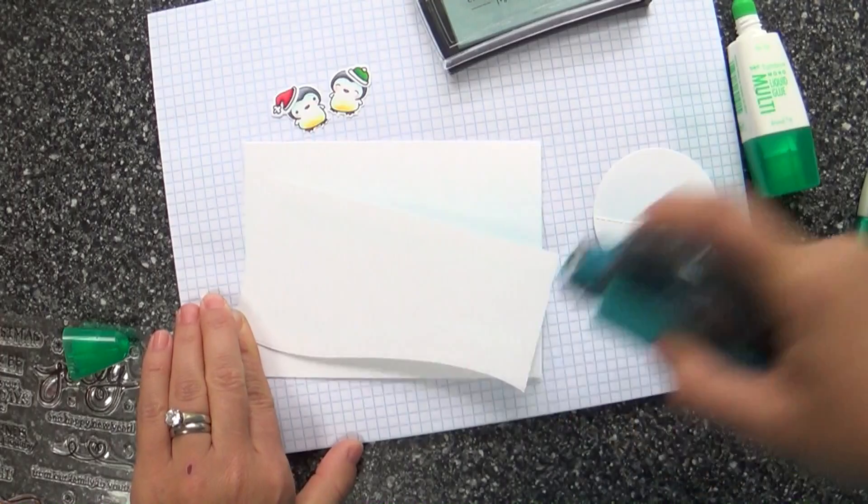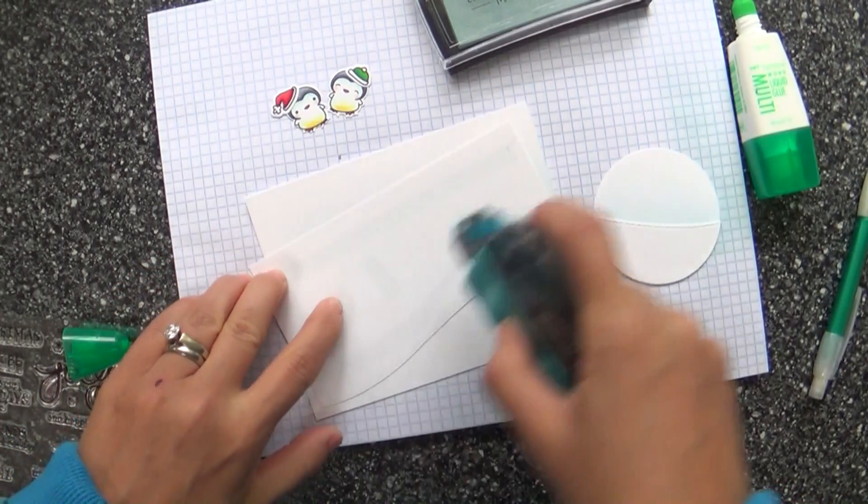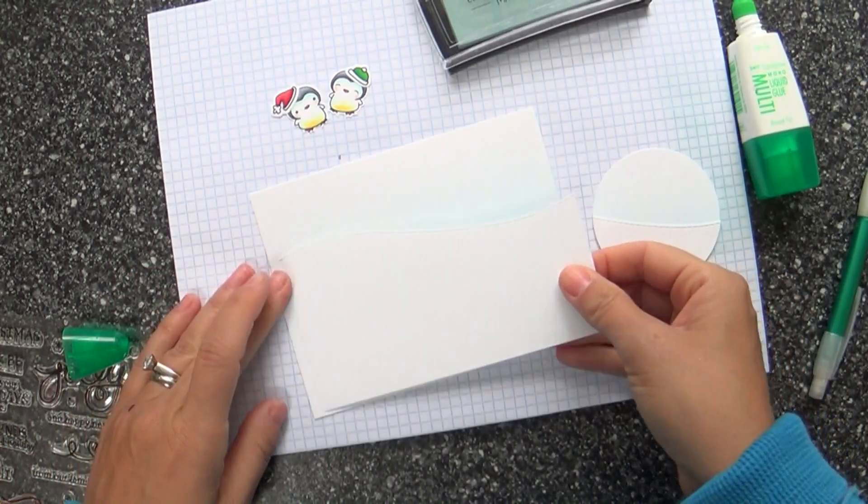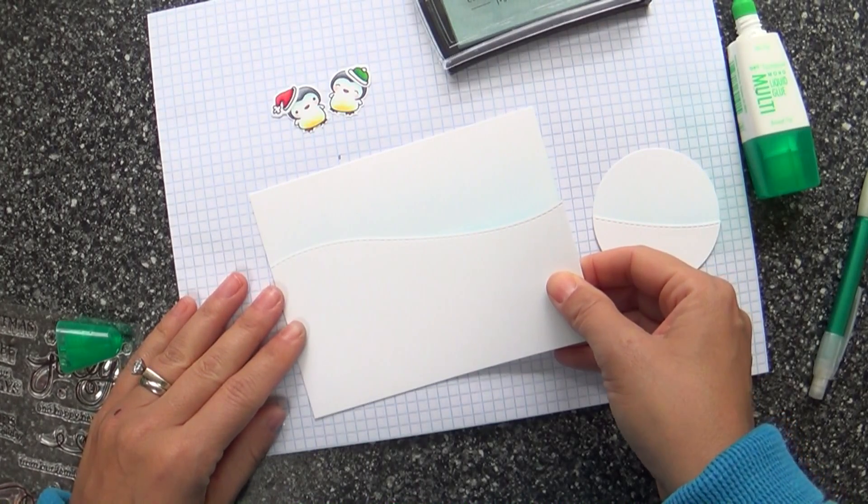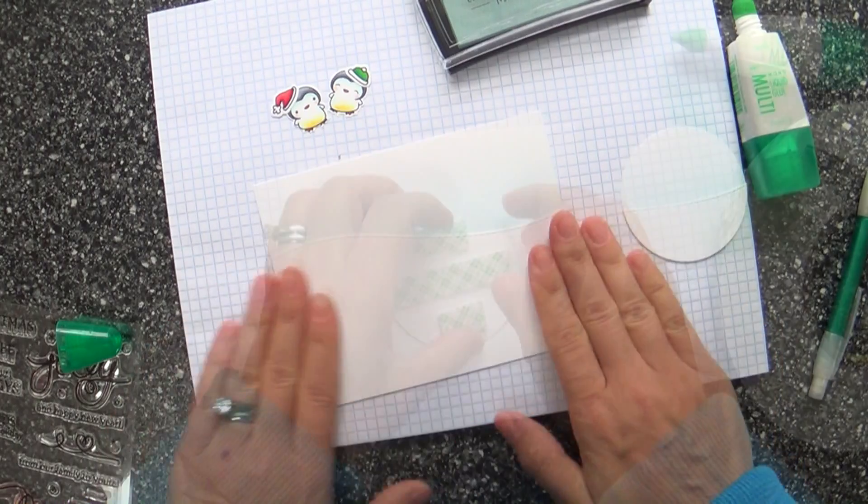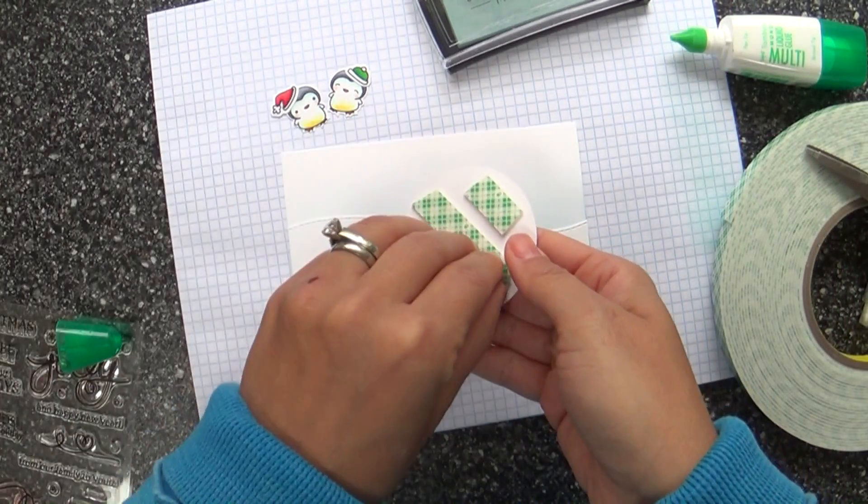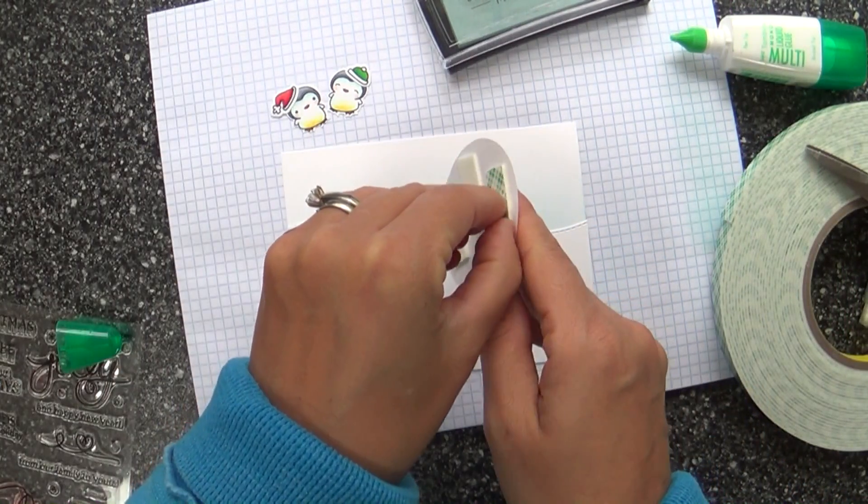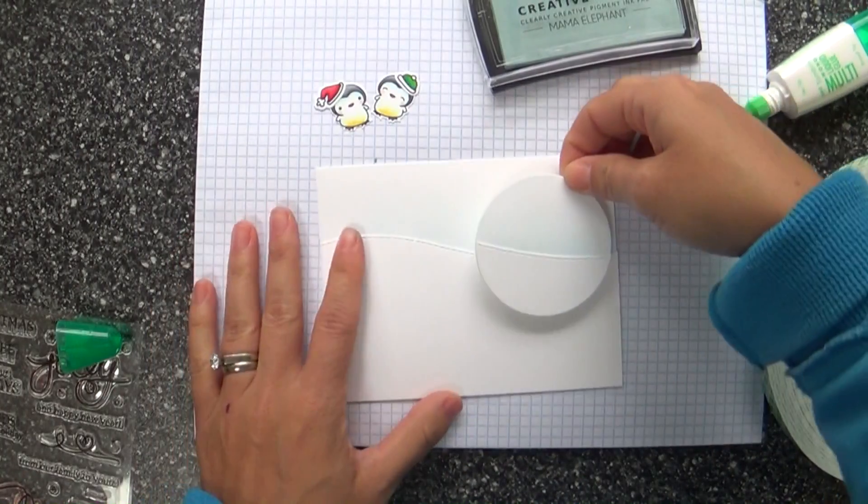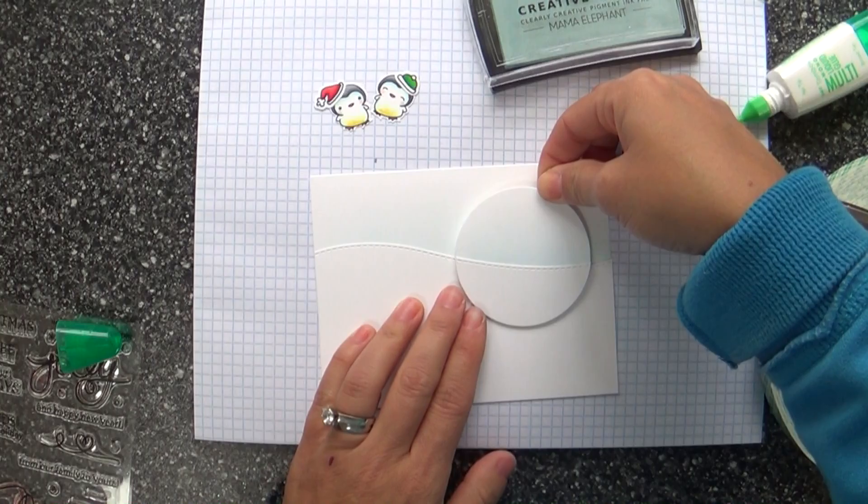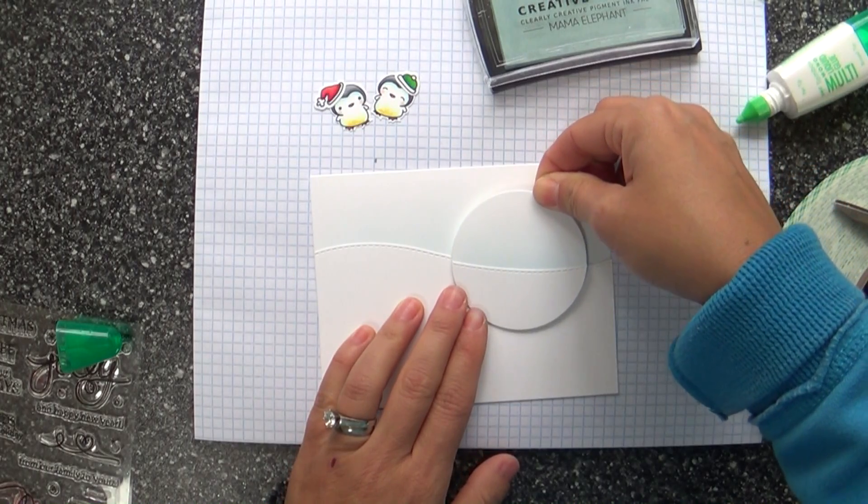And now we'll take our big snowy panel and we'll adhere that just with some tape runner. This is Tombow, my favorite tape runner. And then we'll adhere that down. And then we'll take some foam tape and put it on the back of that circle because we're going to pop that up. This is called a popped up focal panel. Got that? Popped up focal panel. Yes, maybe I should make that abbreviation. Okay, so here we go. Put that on, line it up so it matches up just perfectly.